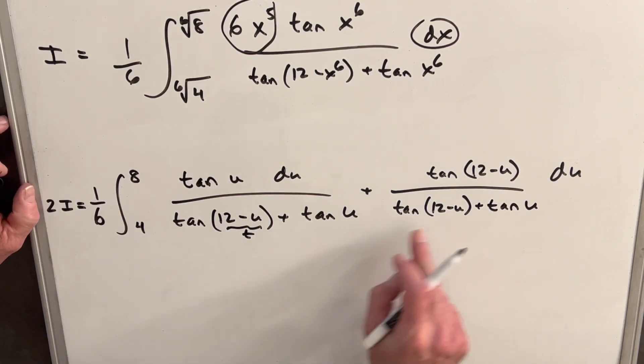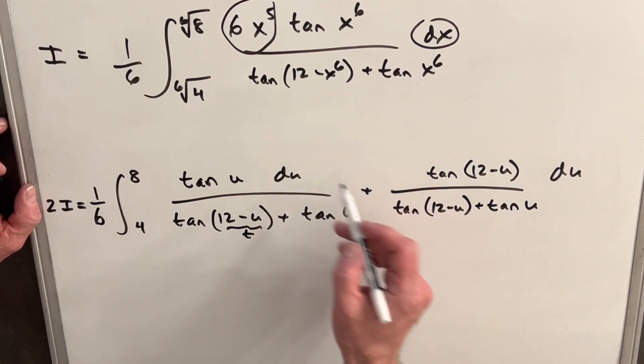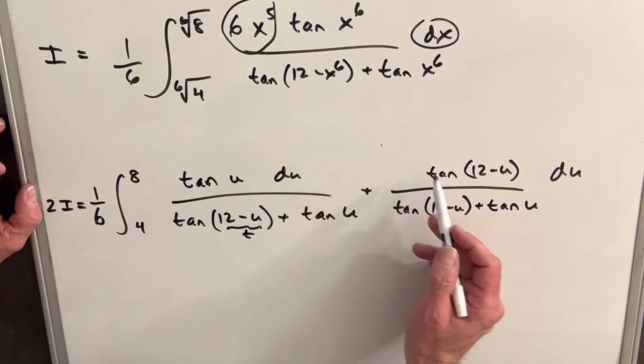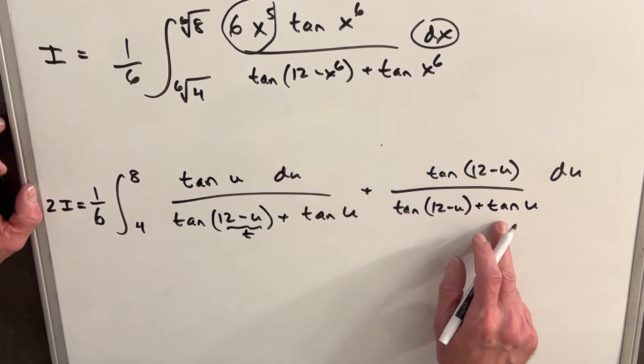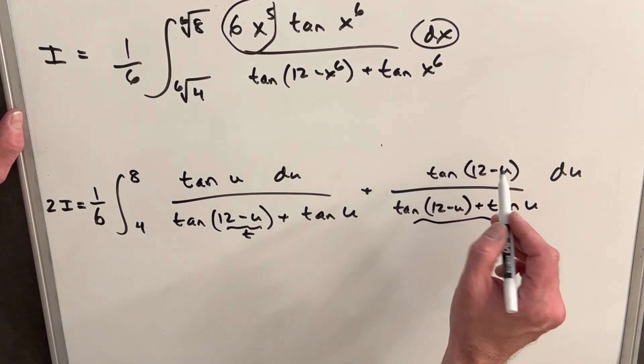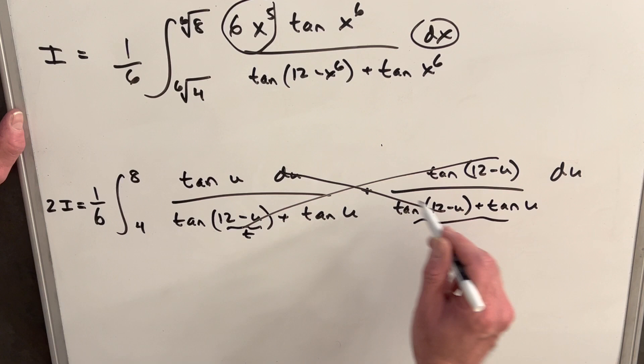And because we have the same denominator in each, we can just add these together, we can add our numerators. And what's going to happen is when we add tan u to tan 12 minus u, we end up with the exact same thing we have here in our denominator. So essentially, not essentially, all this is actually just one.